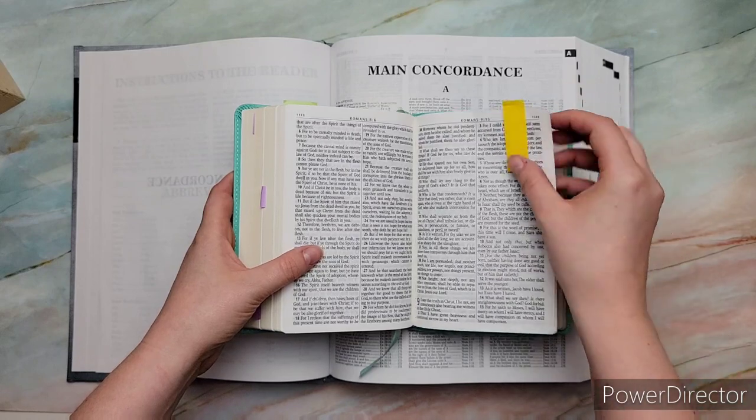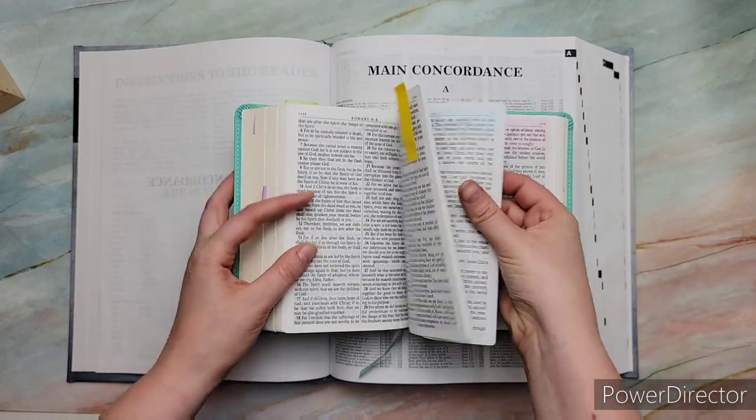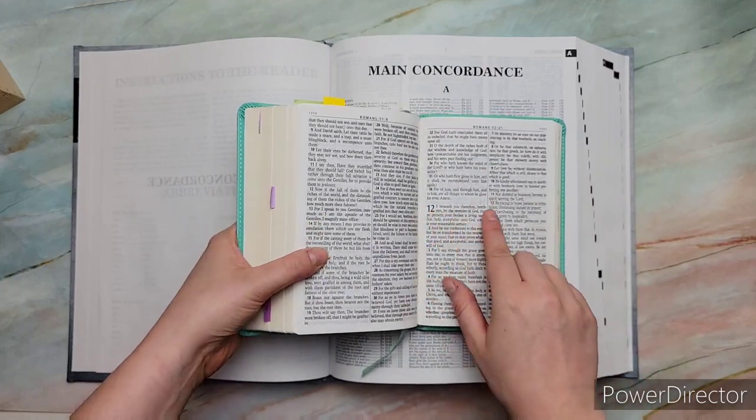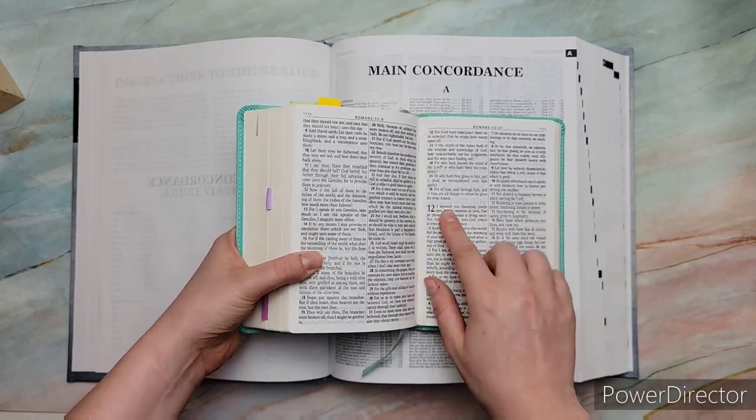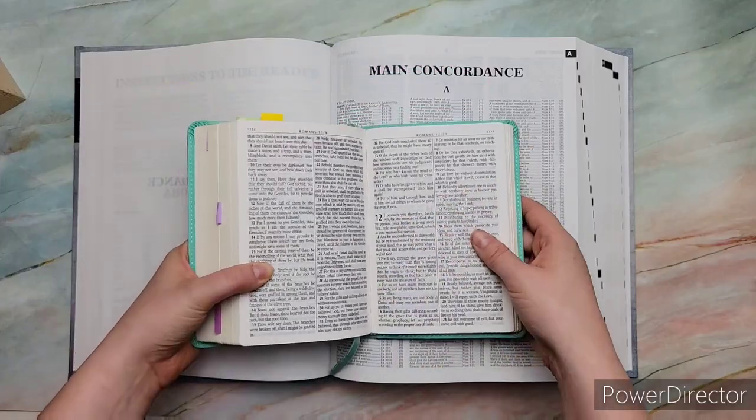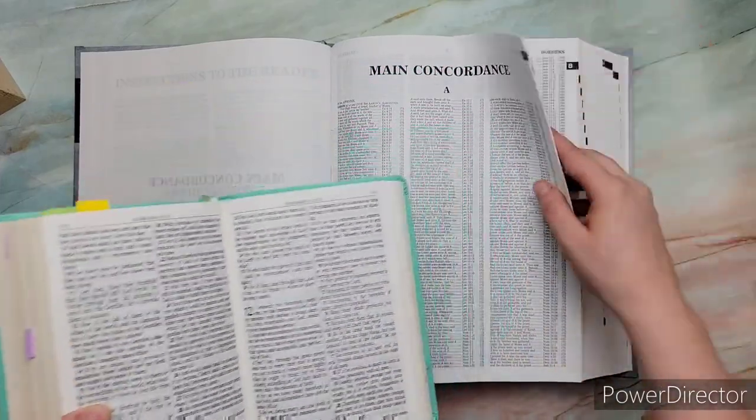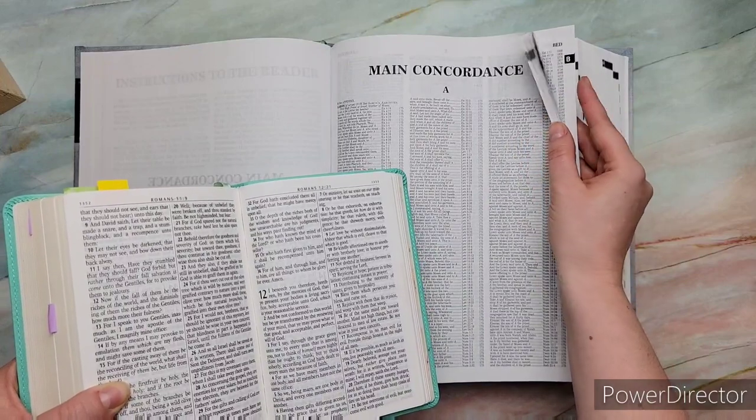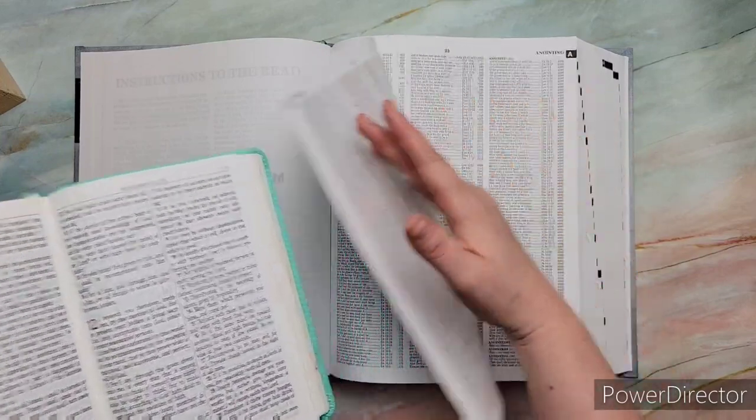So to do this, I'm going to show you how to use it. So you pick a verse or a word in a verse that you want to study. So let's do Romans 12:1, and let's look at beseech. So you go to the B's in the main concordance area, and you find beseech.